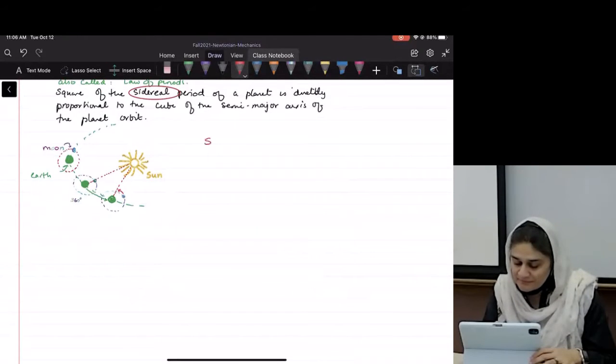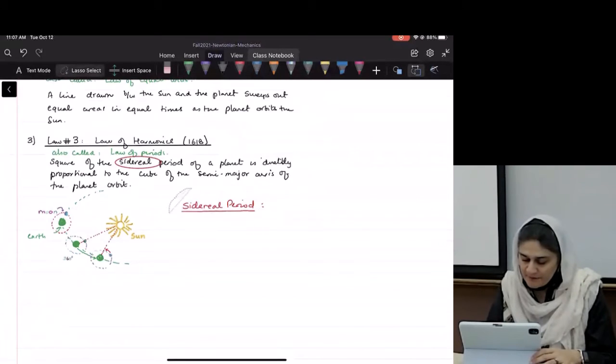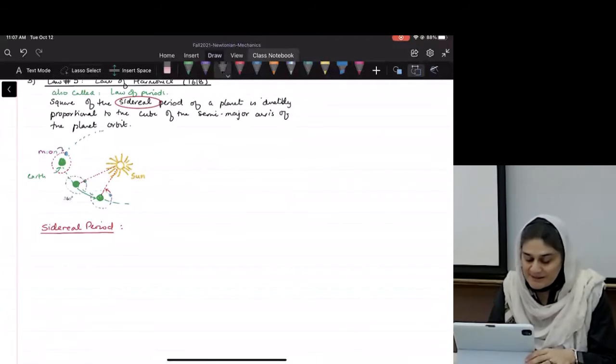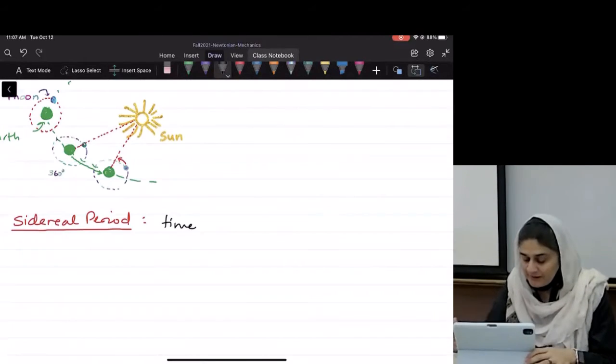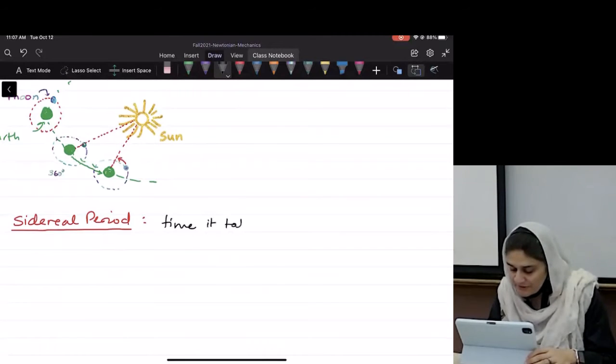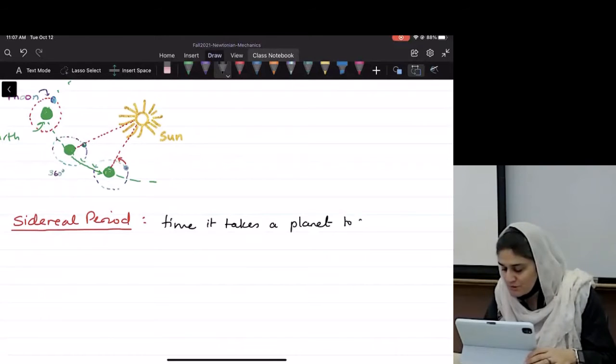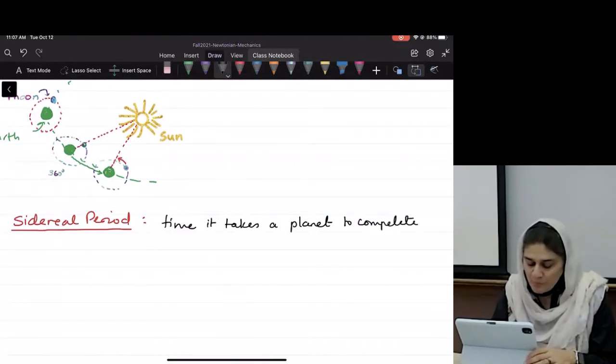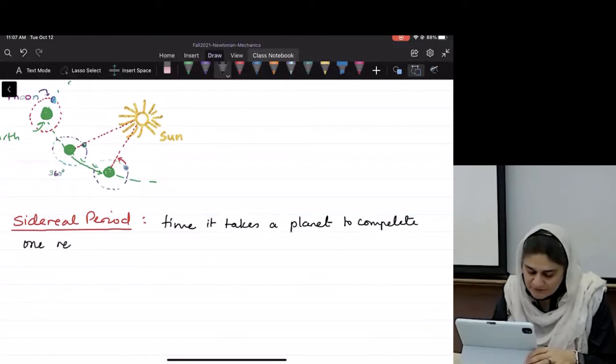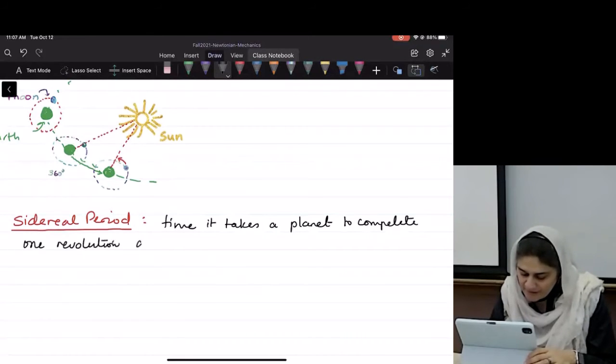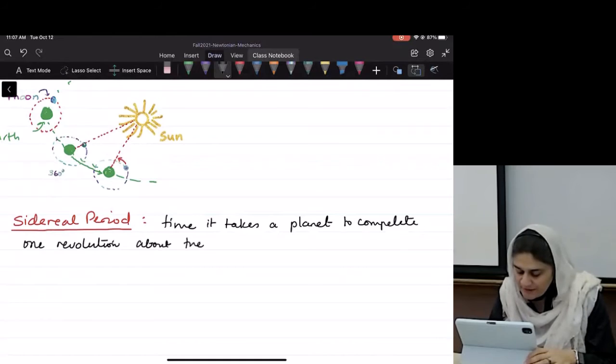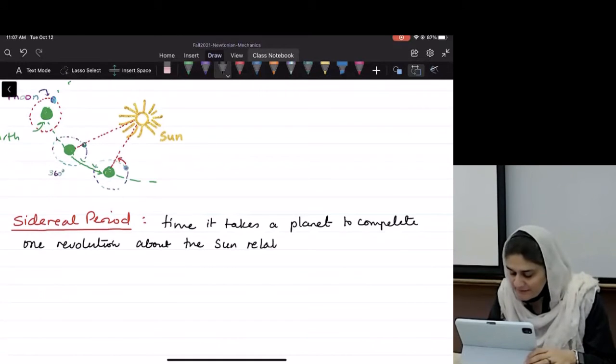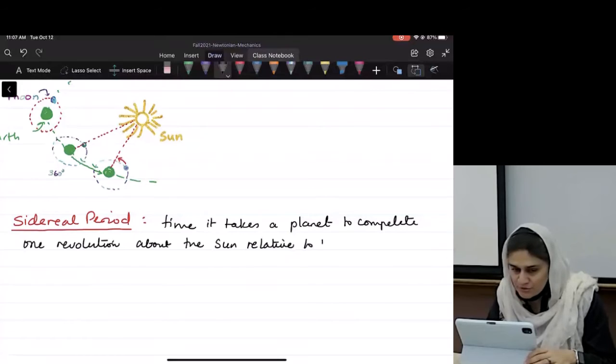The sidereal period. I'm going to move this down here. So a sidereal period is the time it takes a planet to complete one revolution about the sun relative to the stars.